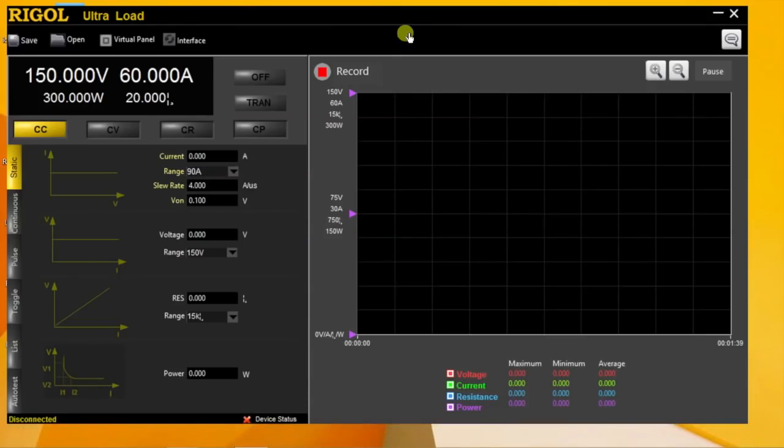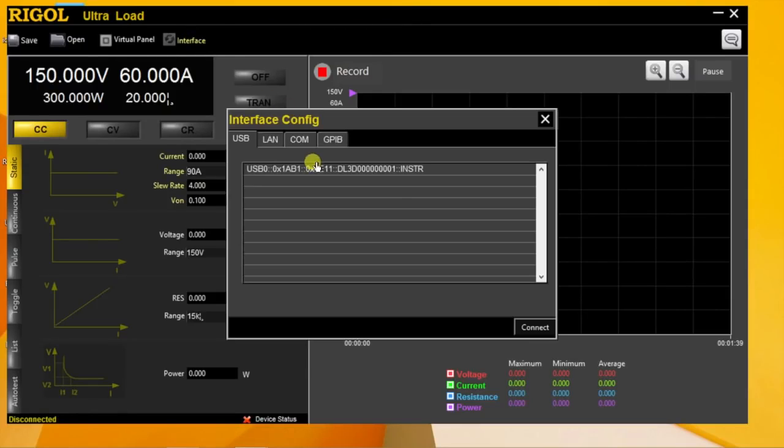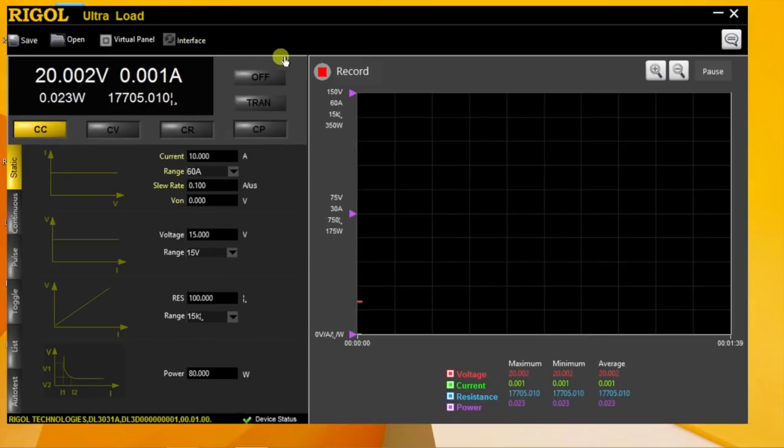Start by opening the UltraLoad free software. From here we can connect to the instrument over USB, LAN, GPIB or RS232.